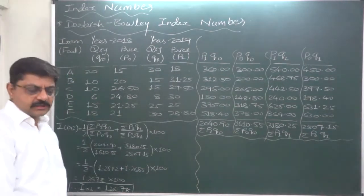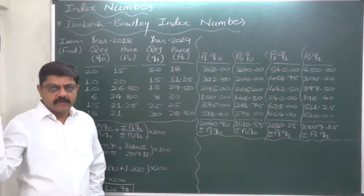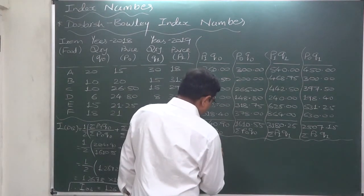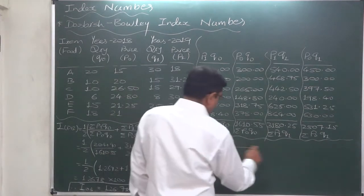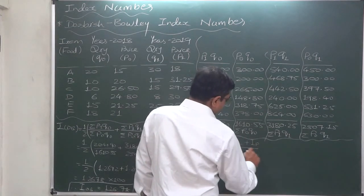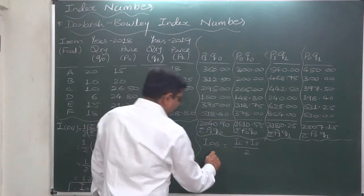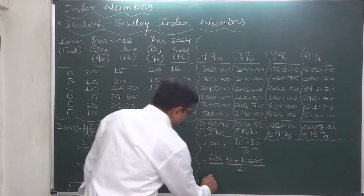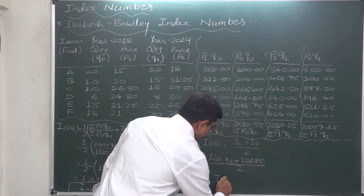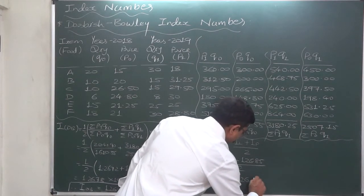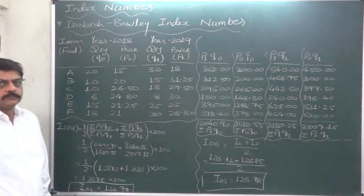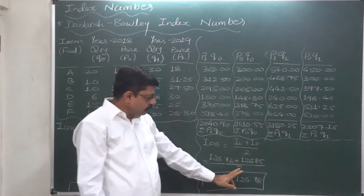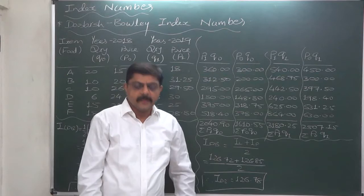We have already calculated Laspeyres' index number and Paasche's index number for the same data in our previous lecture, so you can get these answers from your notebook. The other interpretation of the Dorbish and Bowley index number is that it is the arithmetic mean of Laspeyres' index number and Paasche's index number. We have both values: 126.72 plus 126.85, divided by 2, and it comes to the same result — 126.78. So the Dorbish and Bowley index number is nothing but the simple arithmetic mean of Laspeyres and Paasche's index numbers.